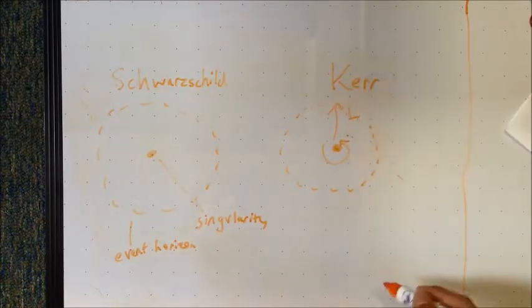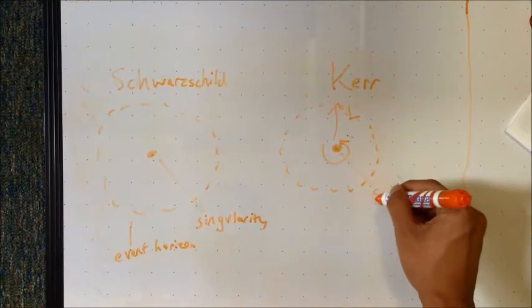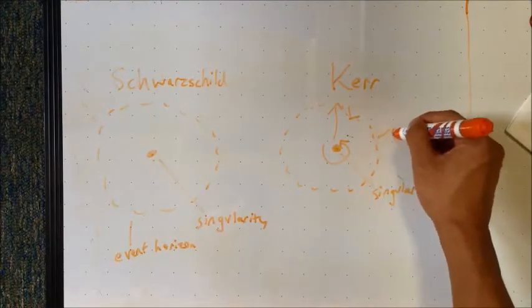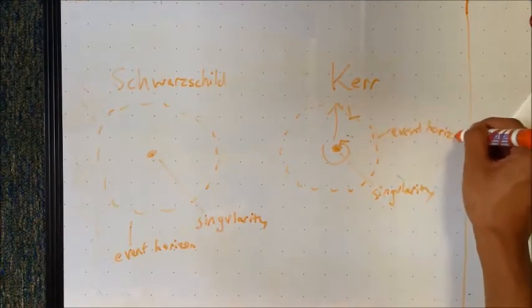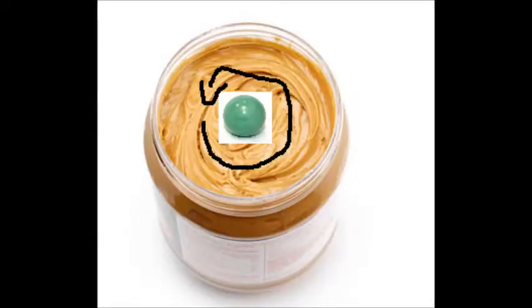However, because it is rotating, it also has what is known as an ergosphere. Einstein's theory of general relativity predicts that a rotating object will have a frame-dragging effect on the space-time around it, much like a rotating marble in a jar of peanut butter will drag some of the peanut butter with it.